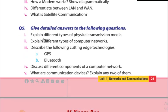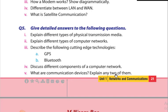Give detailed answers to the following questions. Explain different types of physical transmission media — we know three types: twisted pair, coaxial, and fiber optic cable. Explain different types of computer networks: LAN, WAN, and MAN — and explain them. Describe the following cutting-edge technologies: GPS and Bluetooth. Discuss different components of a computer network — sending, receiving, communication, and transmission. What are communication devices? Explain any two of them — modem and NIC.